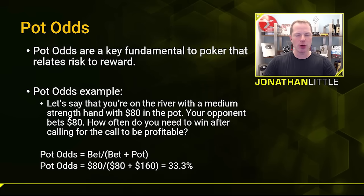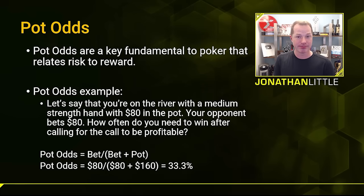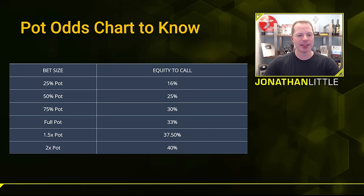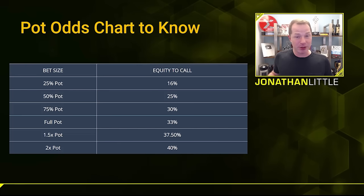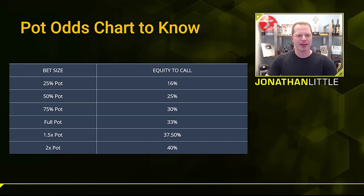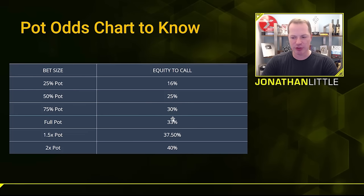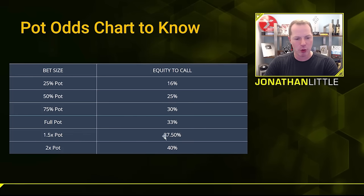So that means in this scenario, if you will win 33.3% of the time or more, you should call. And very often in poker, especially if your opponent makes a small bet, you don't need to win very often at all. Here's a pot odds chart you need to know: if your opponent bets 25% pot, you need to realize 16% equity or more to justify calling. If they bet half pot, you need 25% equity. If they bet 75% pot, you need 30% equity. If they bet the full pot, you need 33% equity. If they overbet 1.5x pot, you need 37.5% equity or more to continue.